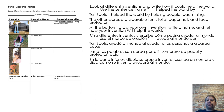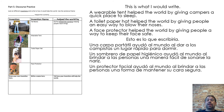Look at different inventions and write how they could help the world. Use the sentence frame: blank helped the world by blank. Tall boots helped the world by helping people reach things. The other words are: wearable tent, toilet paper hat, and face protector. At the bottom, draw your own invention. Write a name and tell how your invention will help the world. A wearable tent helped the world by giving campers a quick place to sleep. A toilet paper hat helped the world by giving people an easy way to blow their noses. A face protector helped the world by giving people a way to keep their face safe.